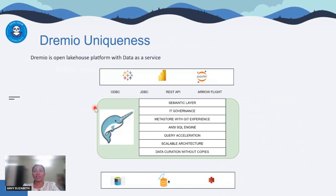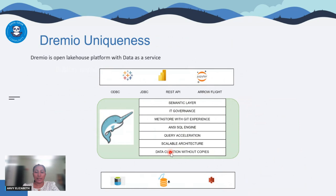This is where Dremio comes into picture. Dremio is loosely coupled with analytics tools like Power BI, Tableau, Jupyter notebooks, or data science model environments, and also loosely coupled with your data sources — you don't need particular connectors to query your data. Dremio's key features include a good semantic layer, IT governance metastore, a unified SQL engine, query acceleration with reflections, a scalable distributed architecture, and the ability to create curated data sets without creating any physical copies. These are the added advantages of Dremio.